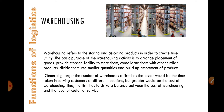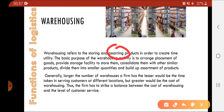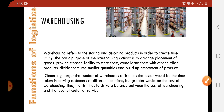Moving on to the second function: warehousing. In warehousing, we have to store the products and assort the products. Assorting means — for example, a rack that contains all bottles of different sizes, small, medium, or big, and different colors. So assorting is a group of similar things that are different in sizes, colors, or qualities. Warehousing refers to storing and assorting products in order to create time utility.